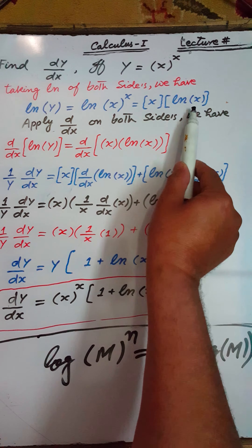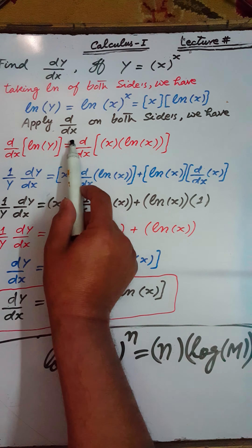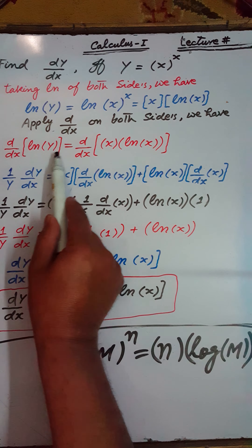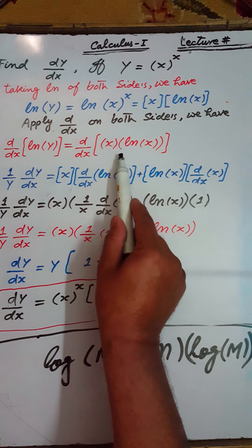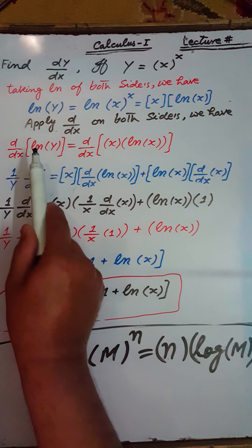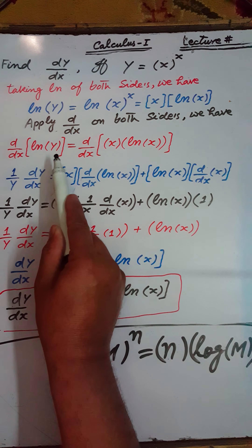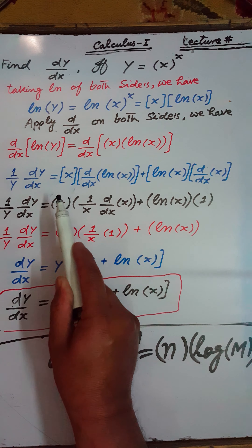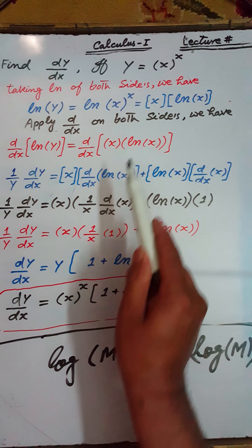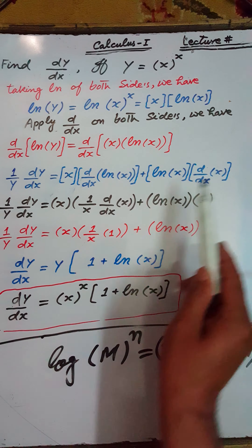Now we apply the derivative operator d/dx to both sides: d/dx of log(y) equals d/dx of x·log(x). The derivative of log(y) is (1/y)·(dy/dx). On the right side, since x·log(x) is a product of two functions, we apply the product rule: first function times derivative of the second, plus second function times derivative of the first.